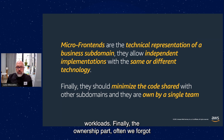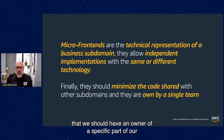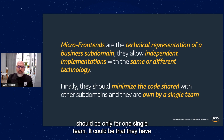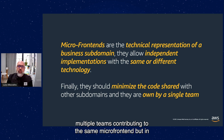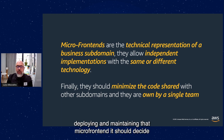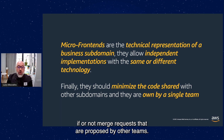Finally, the ownership part. We often forget that we should have an owner for a specific part of our application. It doesn't mean ownership should be for only one single team — multiple teams can contribute to the same micro-frontend — but in reality, just the team owning the responsibility of deploying and maintaining that micro-frontend should decide whether or not to merge pull requests proposed by other teams.